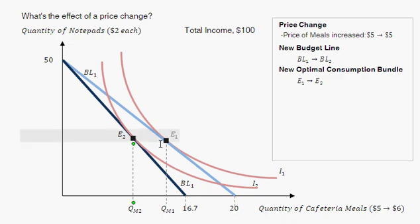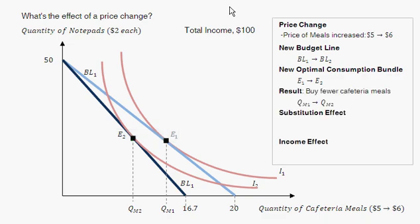However, the effect can be broken down into two parts: the substitution effect and the income effect. The first effect is that as the price of cafeteria meals goes up, you substitute away from it — you buy fewer cafeteria meals so you can buy more notepads. You'll notice E2 is slightly above E1; we're substituting away from cafeteria meals and into notepads.